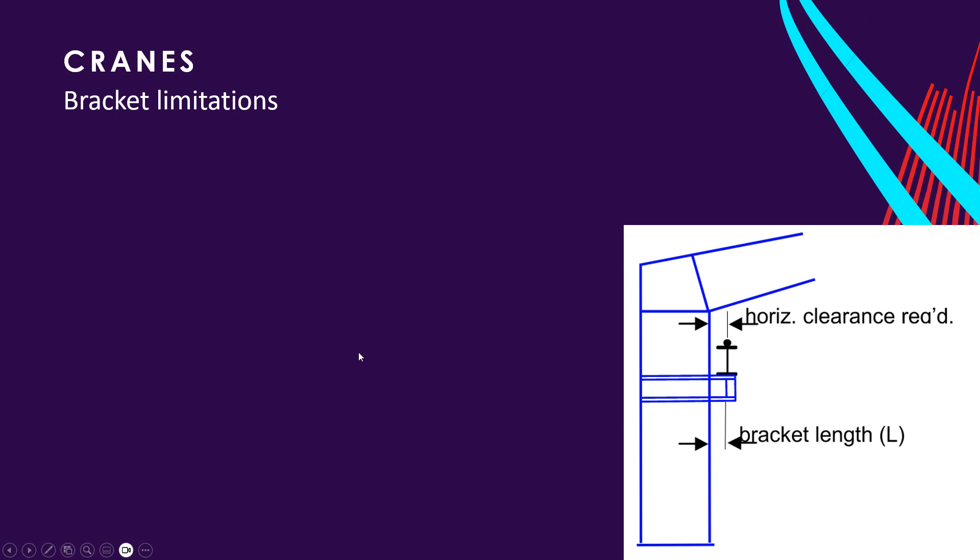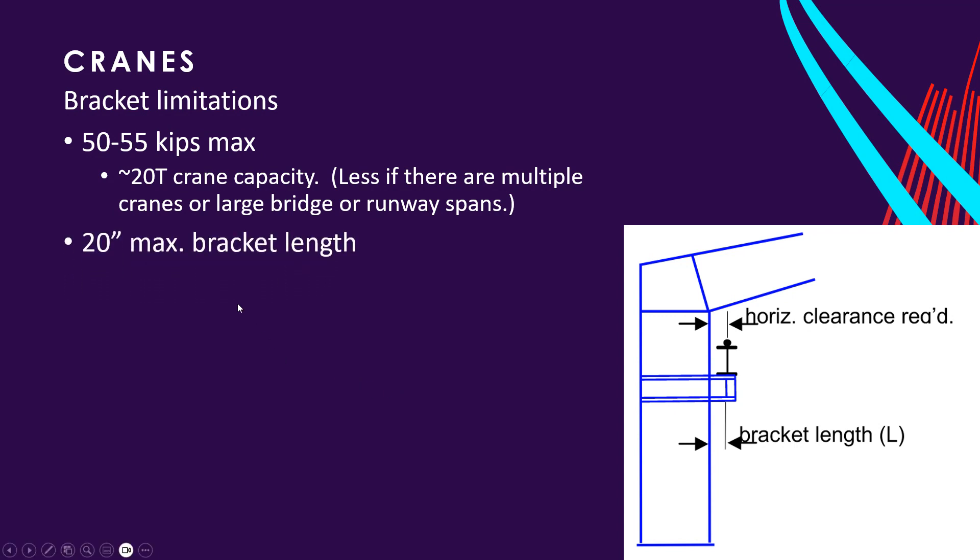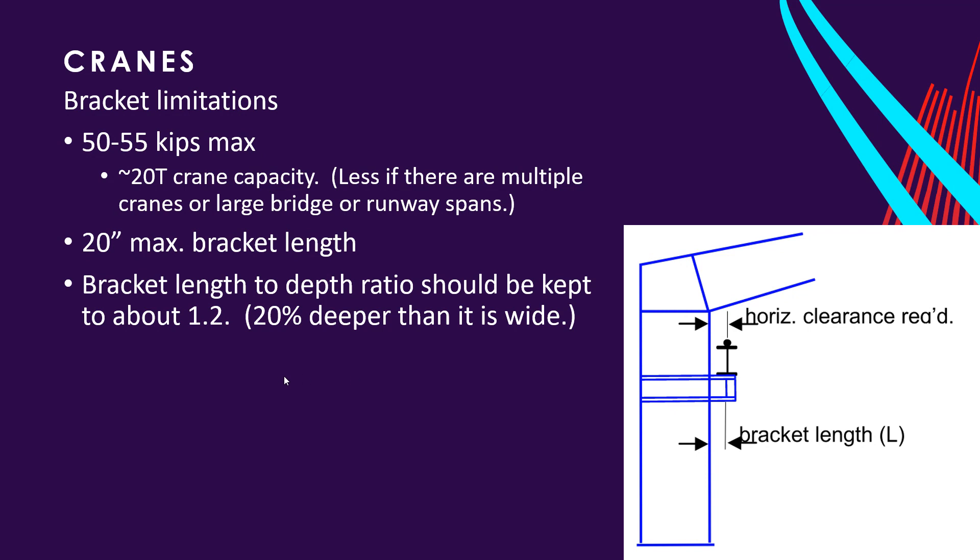On the bracket, you have some limitations here. Again, 50 to 55 kips, 20 ton crane capacity, less if there's multiple cranes in the aisle. Or if you have even a 20 ton crane with a large bridge or a large runway, you might not get that capacity that you're looking for. The bracket length, as defined here from face of column to center line of the runway, you want to hold that to about 20 inches. Diminishing returns if you go out longer distances. The bracket length to depth ratio should be kept to about 1.2. In other words, it's 20% deeper than it is wide.